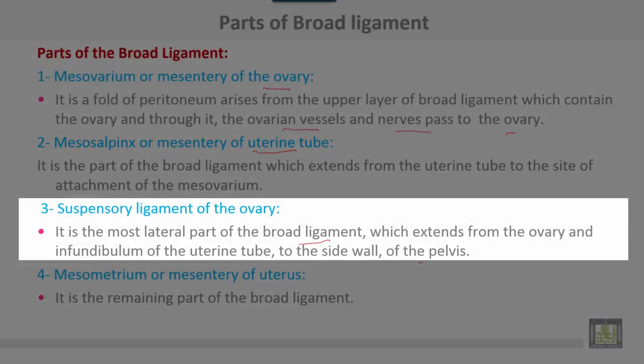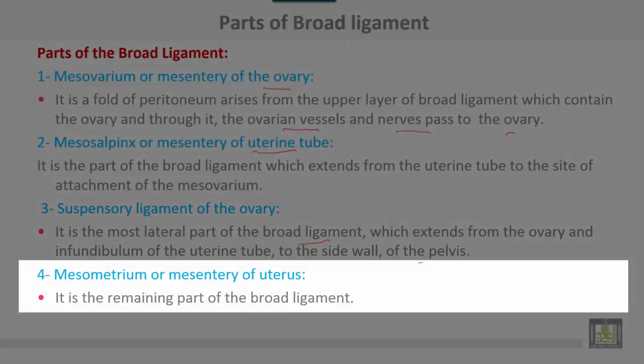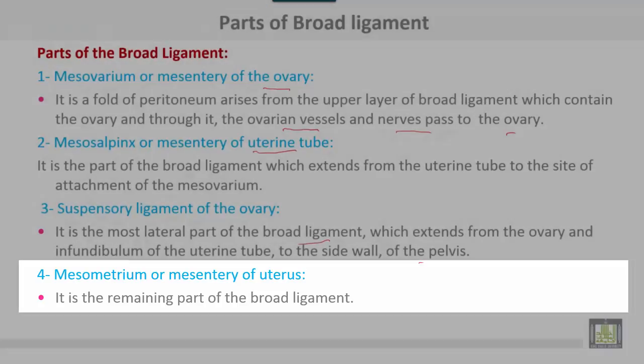The suspensory ligament of the ovary is the most lateral part of the broad ligament, extending from the ovary and infundibulum of the uterine tube to the side wall of the pelvis. The mesometrium is the remaining part of the broad ligament, serving as the mesentery of the uterus.